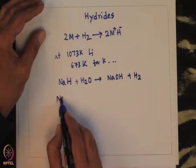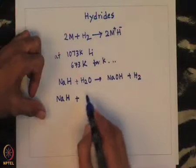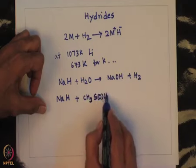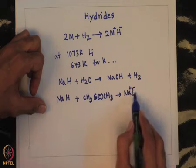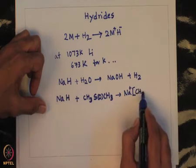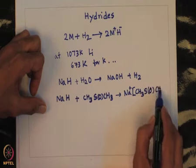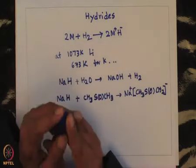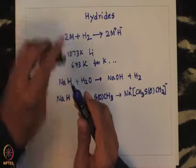Sodium hydride can also activate acidic C–H protons, similar to sodium amide. For example, sodium hydride on treatment with dimethyl sulfoxide (CH₃SOCH₃) forms a corresponding salt. The H⁻ anion is a strong base and can be used to deprotonate organic molecules containing relatively acidic C–H groups.